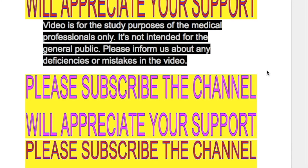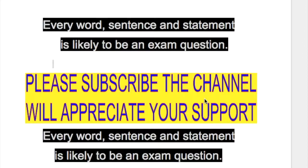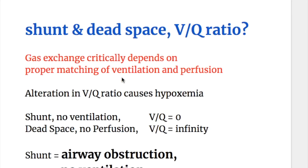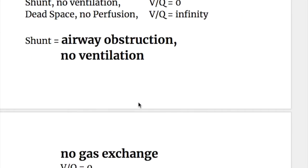In this video we'll discuss the abnormalities in the two parts of the ventilation-perfusion ratios — that is the abnormalities in the ventilation and the abnormalities in the perfusion. They are shunt and dead space. Gas exchange critically depends on proper matching of ventilation and perfusion; alteration in V/Q ratio causes hypoxemia.